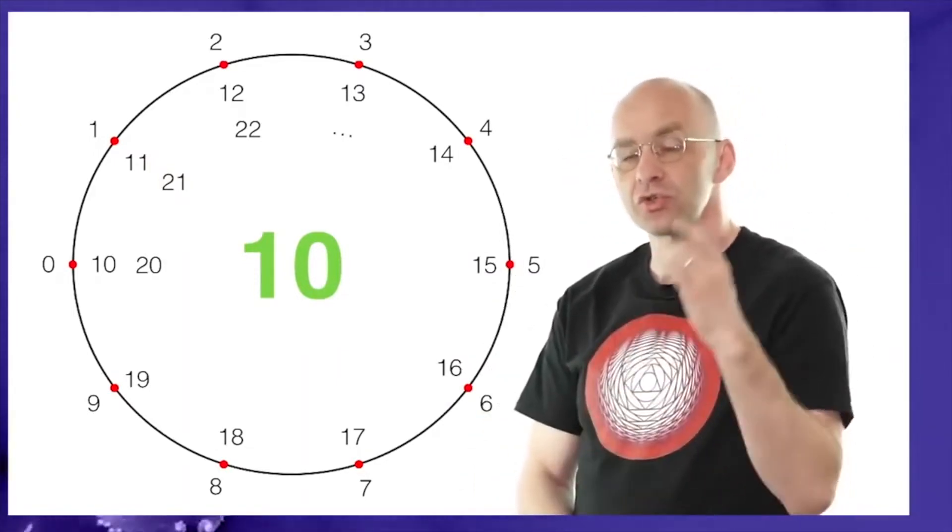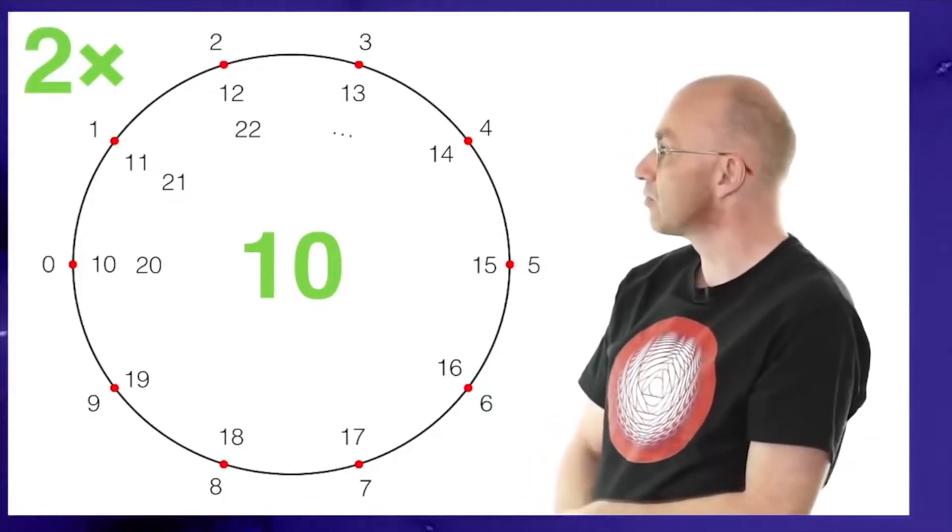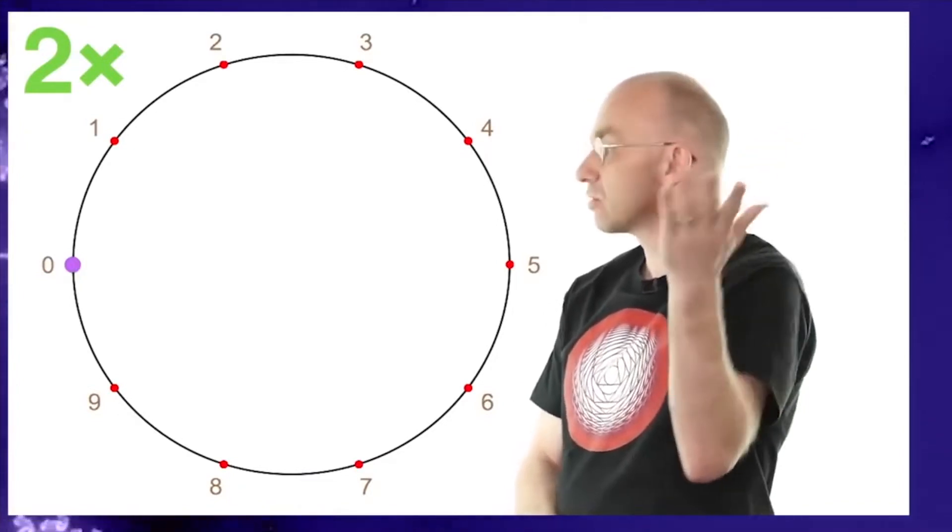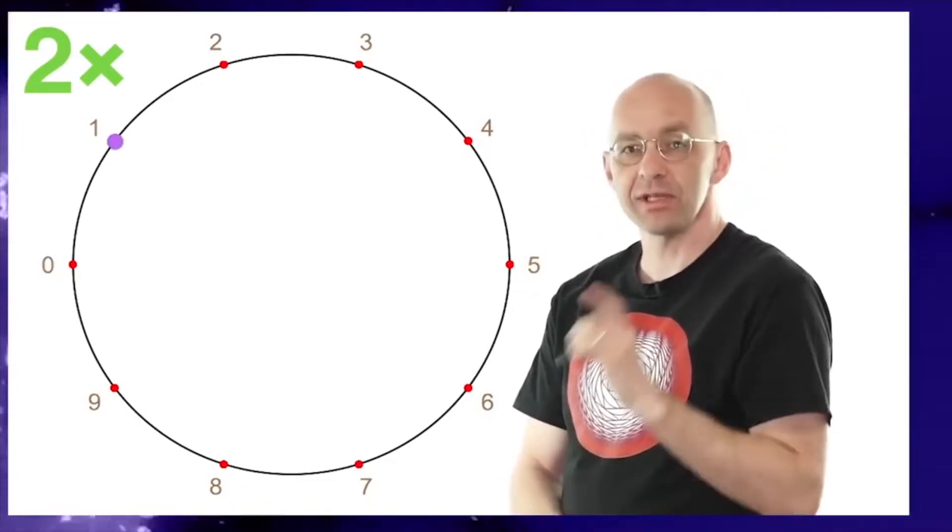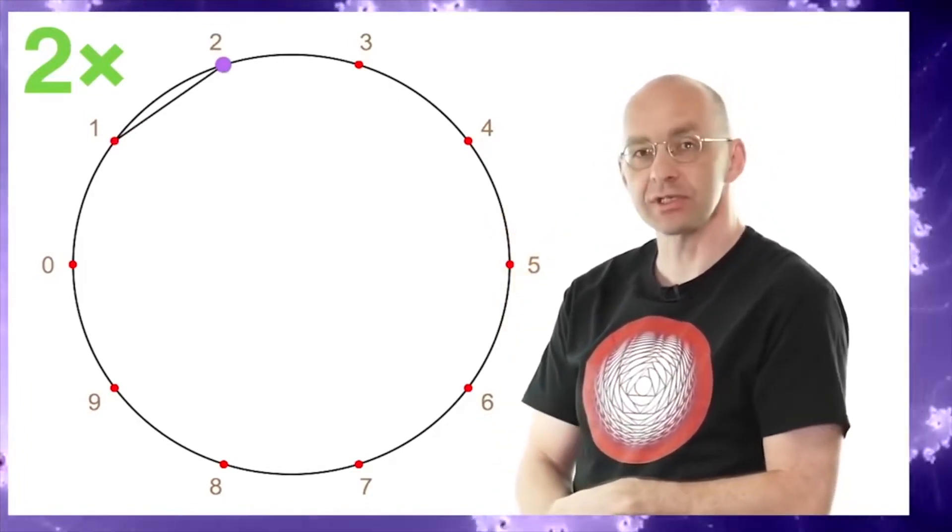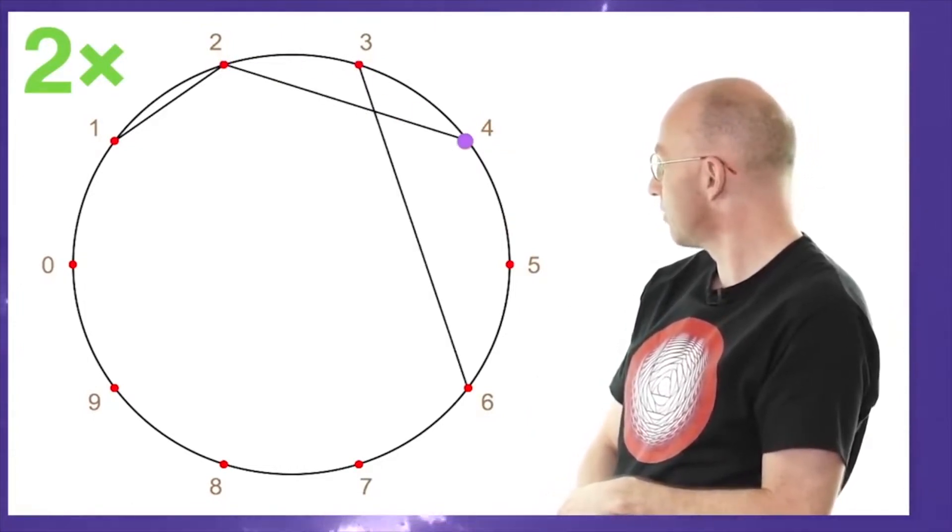And now we're going to do the 2 times table. So 2 times table. And we'll start with 0. So 2 times 0 is 0. So 0 is the same thing. So we don't do anything. 2 times 1 is 2. So we connect the 1 to the 2. Then 2 times 2 is 4. We do this and we keep on going. Pretty obvious.